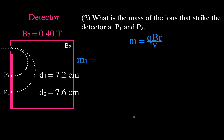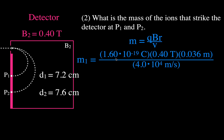For P1: charge = 1.6×10⁻¹⁹ C, B₂ = 0.4 T, V = 4.0×10⁴ m/s, and the radius = half of 7.2 cm = 3.6 cm = 0.036 m. Plugging into M = QBR/V gives a total mass of 5.76×10⁻²⁶ kilograms.